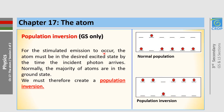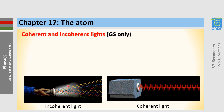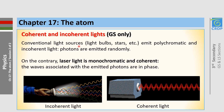For stimulated emission to occur, the atom must be in the desired excited state by the time the incident photon arrives. But normally the majority of atoms are in the ground state. In order to have more atoms in the higher energy level, we must create a population inversion. Conventional light sources like light bulbs and stars emit polychromatic and incoherent light, meaning photons are emitted randomly. On the contrary, laser light is monochromatic and coherent — the waves associated with the emitted photons are in phase.